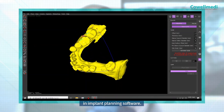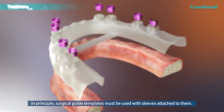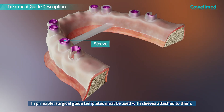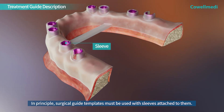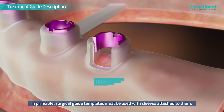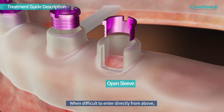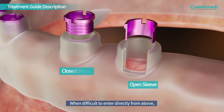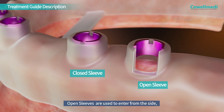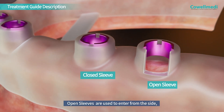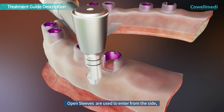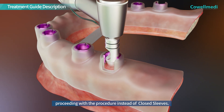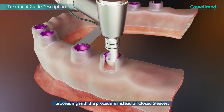In implant planning software, surgical guide templates must in principle be used with sleeves attached to them. When it is difficult to enter directly from above, open sleeves are used to enter from the side, proceeding with the procedure instead of closed sleeves.